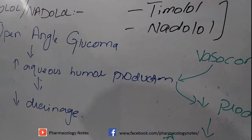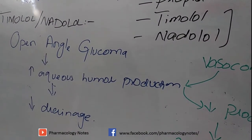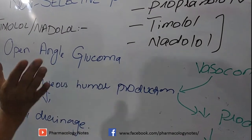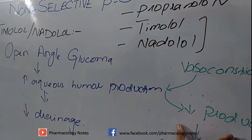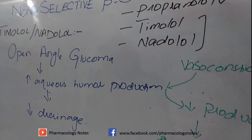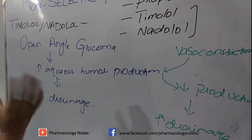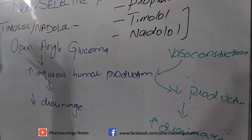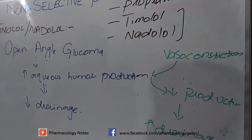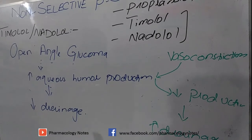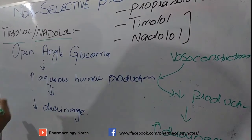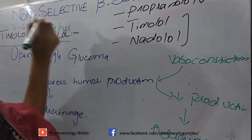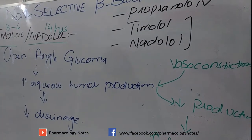The therapeutic uses of timolol and nadolol are hypertension and open-angle glaucoma. Regarding pharmacokinetics: timolol has a duration of action of 3 to 6 hours, while nadolol has a longer duration of action of 14 hours.